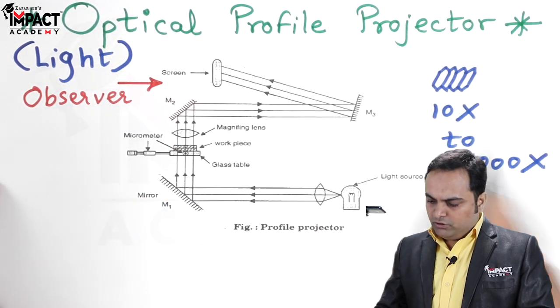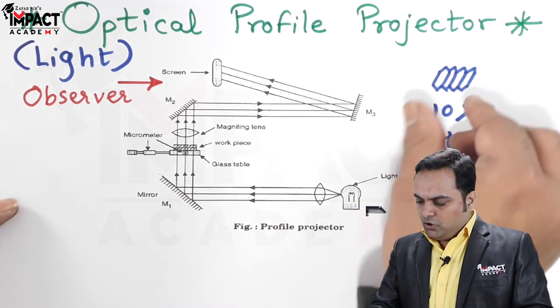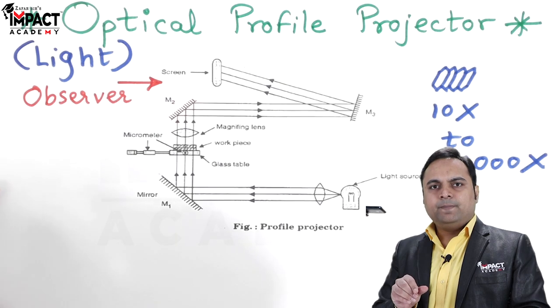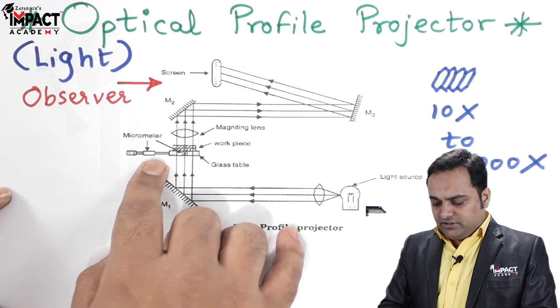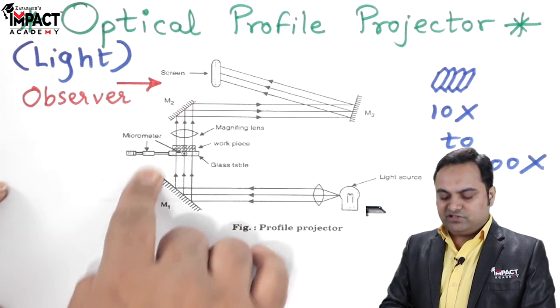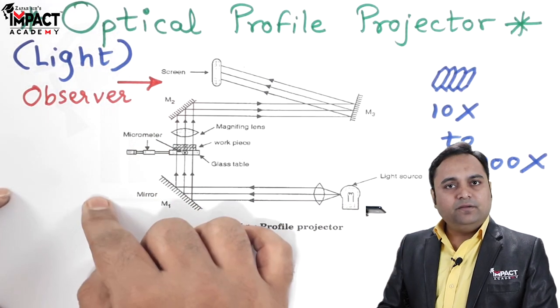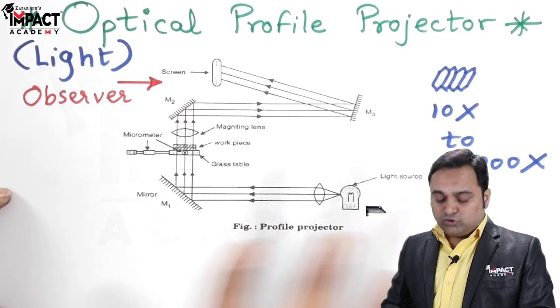The optical profile projector is a device used to indicate very small objects on a very large scale. At the same time, this instrument won't have any wear and tear because it uses light; there is no mechanical medium, so there is no wear and tear of the workpiece.